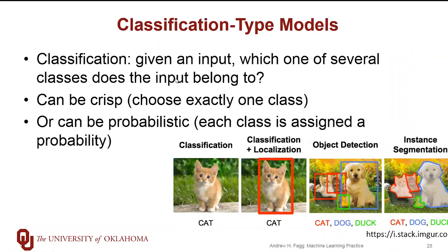For classification problems, we have some sort of an input presented to the model and its job is to label the input as being a member of one of several discrete classes. This left-hand image is an example where we present an input — a picture of a cat — and the model produces the label 'cat'. The output can be crisp, 'it is a cat', or probabilistic: a cat with probability 0.95, maybe a squid with probability 0.01. These other examples constitute something more involved than just classification — really a mixture of classification and regression.